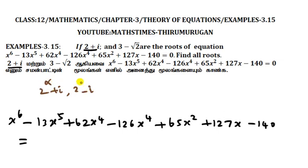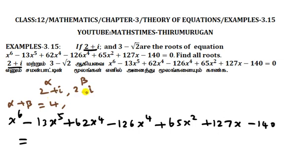Alpha is given, beta is given. Sum of the roots: alpha plus beta equals 2 plus i plus 2 minus i. Plus i and minus i cancel, so this equals 4.